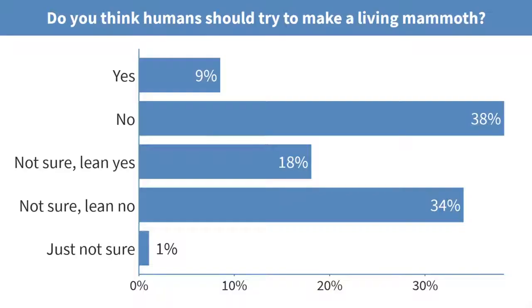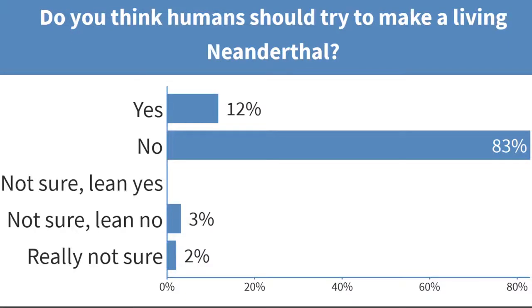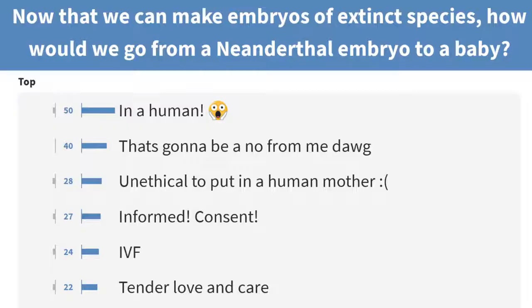At the end of that we asked them, do you think it's a good idea to de-extinct a woolly mammoth? Then we moved to thinking about bringing back a Neanderthal, which is parallel but really puts a fine point on it for the students — because in that case, who would be the surrogate? Would they live in separate populations or would we welcome them into our own families?